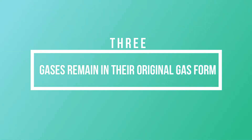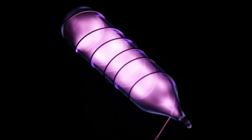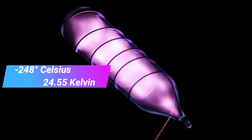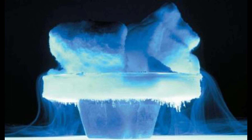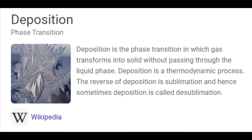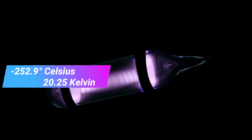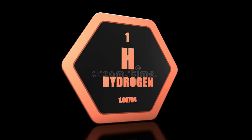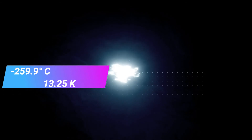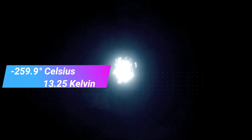At this harsh temperature, three gases still remain in their original gas form. One is neon, with a freezing point of minus 248.6 degrees Celsius or 24.55 Kelvin — it turns directly into solid by the process of deposition, skipping the liquid phase. It is also a noble gas. At minus 252.9 degrees Celsius or 20.25 Kelvin, hydrogen gas turns into liquid, and just seven degrees less than that — at minus 259.9 degrees Celsius or 13.25 Kelvin — hydrogen becomes solid.